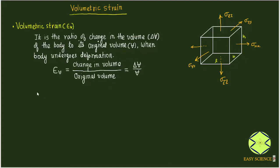Can we derive the expression for volumetric strain when a body undergoes three-dimensional stresses? Since the original volume V is the product of the dimensions of the body — because we are considering a rectangular three-dimensional body — it is length times breadth times height.